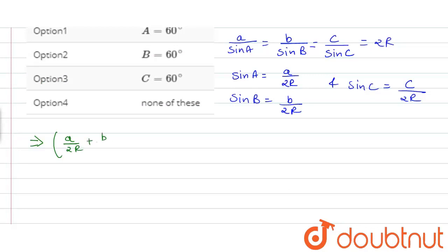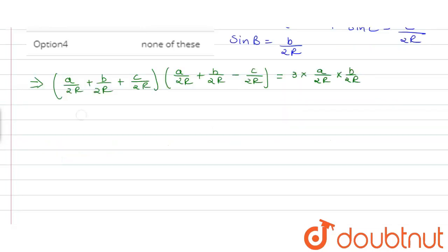This is equal to 3 into A upon 2R into B upon 2R. By taking LCM we get A plus B plus C upon 2R into A plus B minus C upon 2R is equal to 3AB upon 4R squared.